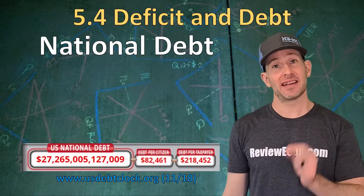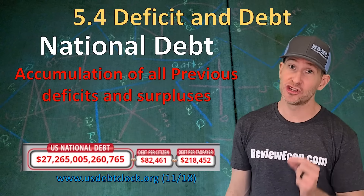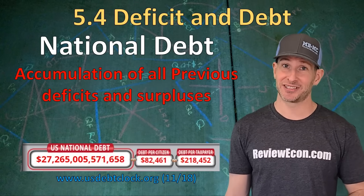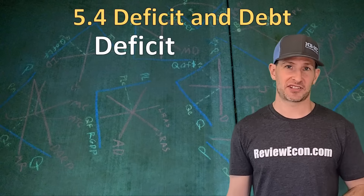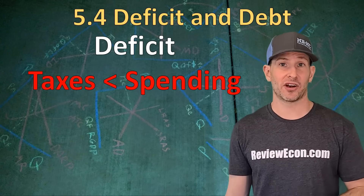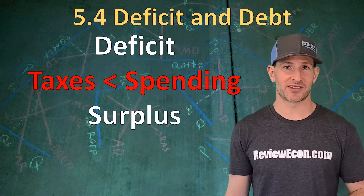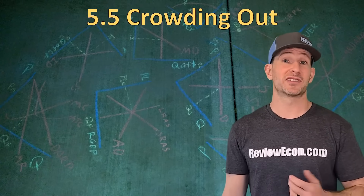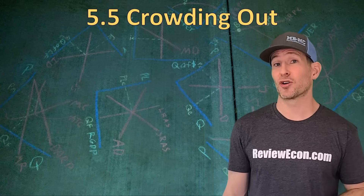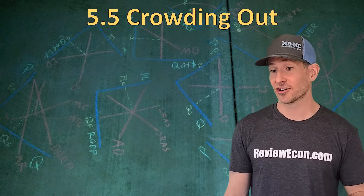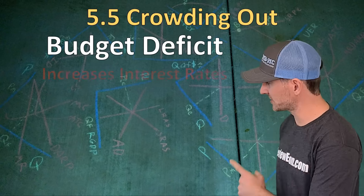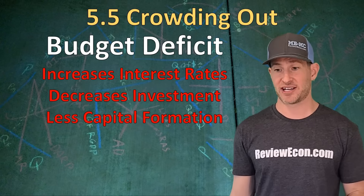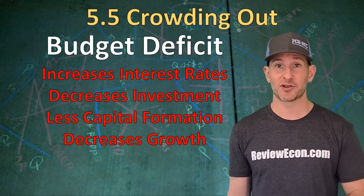The next topic we're going to look at is the differences between the national deficit and the national debt. The national debt is the accumulation of all previous surpluses and deficits — right now it's over 27 trillion dollars and keeps climbing. A budget deficit occurs when the government's taxes are less than government spending, and the national debt rises. A budget surplus occurs when tax revenue is greater than government spending, decreasing the national debt. The big concern about the national debt and current deficit is crowding out. Crowding out occurs when a budget deficit causes interest rates to increase, causing a decrease in gross investment, less capital formation, and that lower capital formation decreases economic growth.